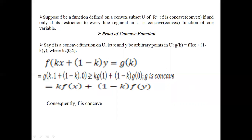Setting x = 1 and y = 0, we get g(k·1 + (1-k)·0) = g(k). Since g is concave — we are assuming g is a concave function — this equals k·g(1) + (1-k)·g(0), which equals k·f(x) + (1-k)·f(y). Consequently f is a concave function.